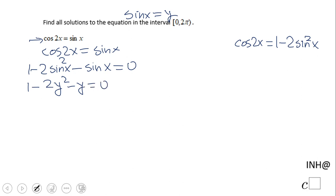We have 1 minus 2y squared minus y equals 0. And now it's up to you how to solve this equation. I'm going to multiply by negative 1 and I get 2y squared plus y minus 1 equals 0.